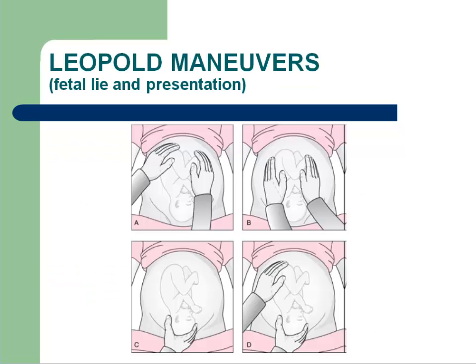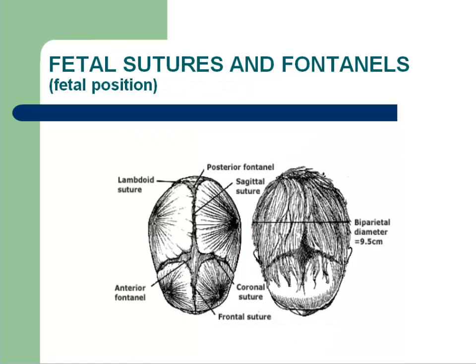This set of drawings illustrates some of the Leopold maneuvers. These drawings illustrate the presence of fetal sutures, which are anatomical lines on the fetal head where the bony plates of the fetal skull join together. Also present are the anterior and posterior fontanelles, which are the baby's soft spots on the skull. Palpation of the sutures and fontanelles during labor allows the clinician to determine the fetal position, or which way the fetal head is facing in relation to the maternal pelvis.